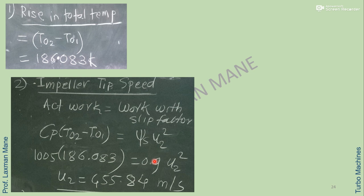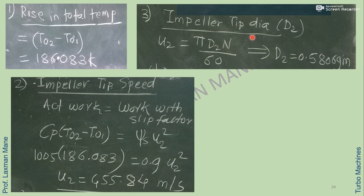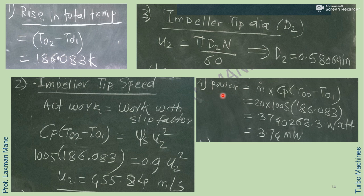For U2 square, since it involves velocity, we use Cp as 1005 J per kg Kelvin. From actual work equals Cp into (T02 minus T01) equals slip factor into U2 square, we find U2. Then using U2 equals pi D2 N divided by 60, we find impeller tip diameter D2. Power is calculated as M_dot into Cp into rise in total temperature, with Cp in J per kg Kelvin, giving power in Watts, which we convert to Megawatts using 1 Megawatt equals 10 to the power 6 Watts.